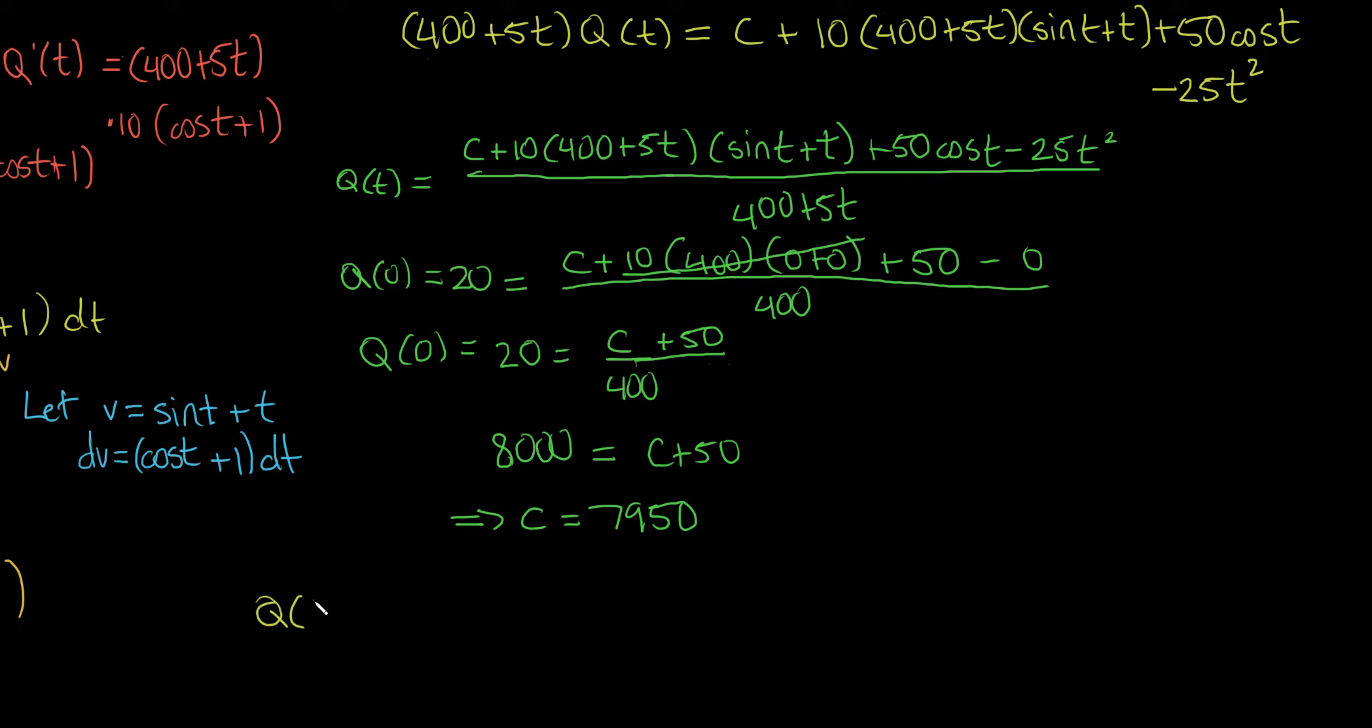So big moment of accomplishment. Let's write out our final answer. That the amount of salt in the pool at any time t, q of t, is going to equal 7,950 plus 10 times 400 plus 5t times the sine of t plus t plus 50 times the cosine of t. And very quickly here, I think I'm going to pause the video and restart it. I'm just going to plug this into a graphing calculator so you can see what this function looks like because it's actually pretty interesting. Well, on the second note, this video is running a bit long. So I'm just going to make this into a short part 3 and show you what this looks like when graphed.